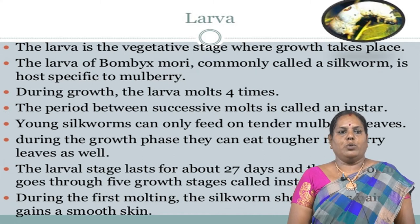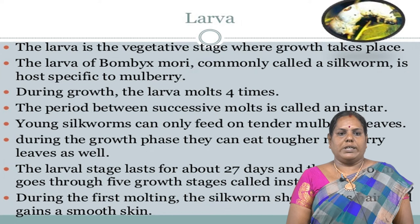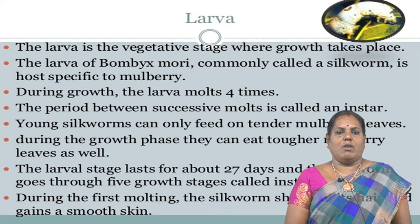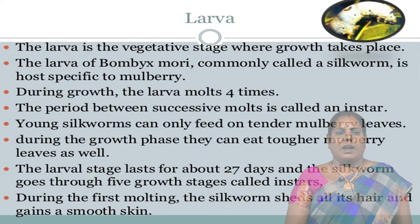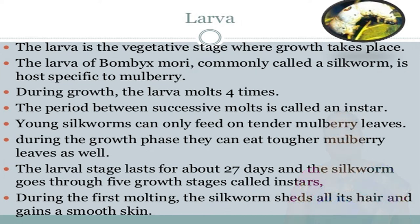During the first molting, the silkworm sheds all its hair and gains a smooth skin. This is the larva stage.